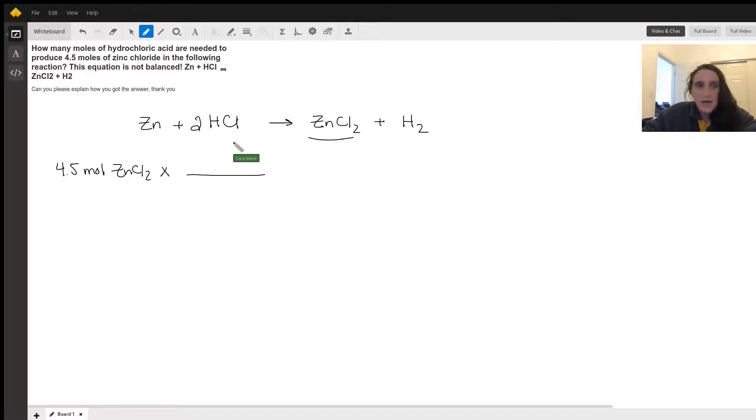go to moles of HCl, I'm going to put moles of HCl on the top and moles of zinc chloride on the bottom. The numbers that go here come from the balanced equation, so I have two moles